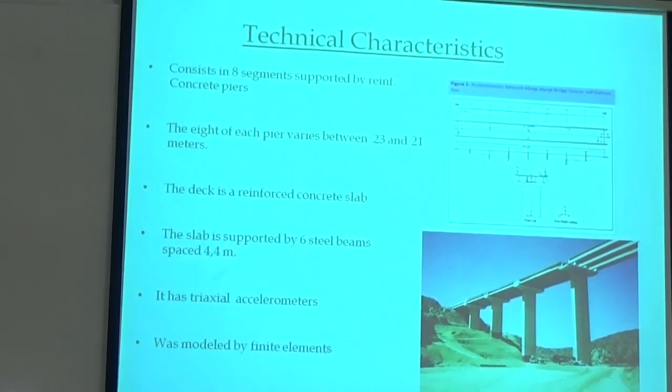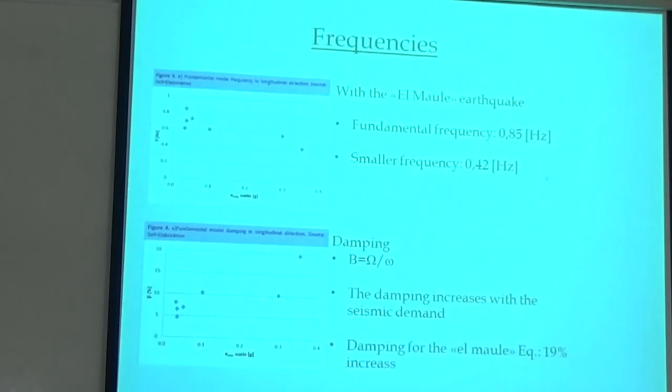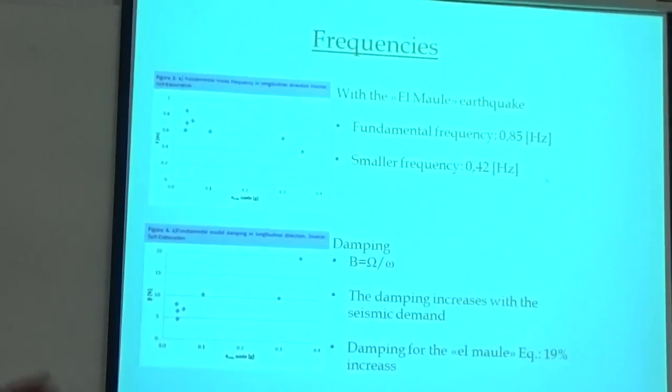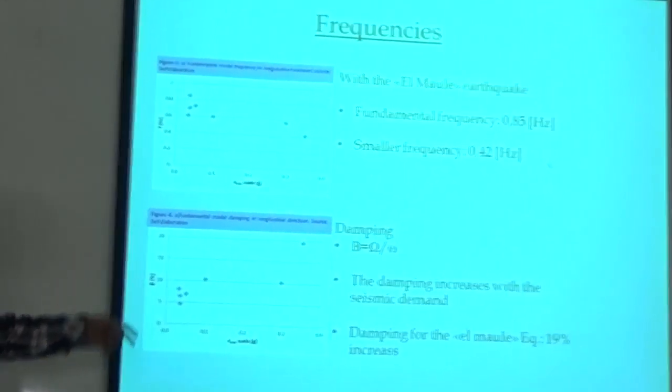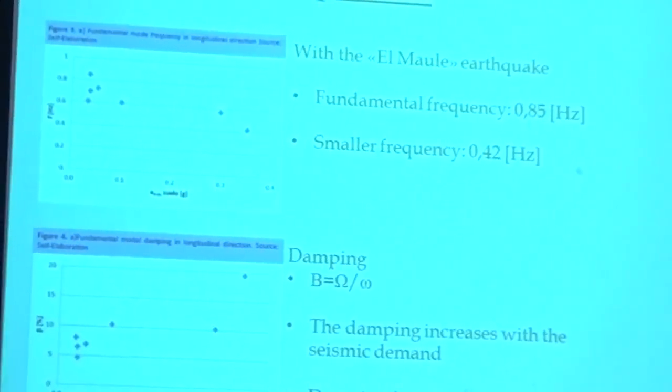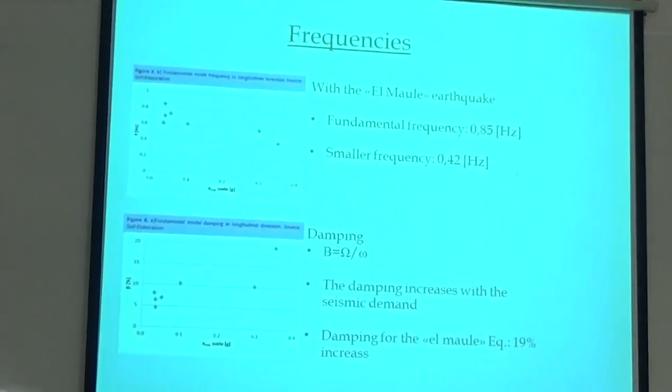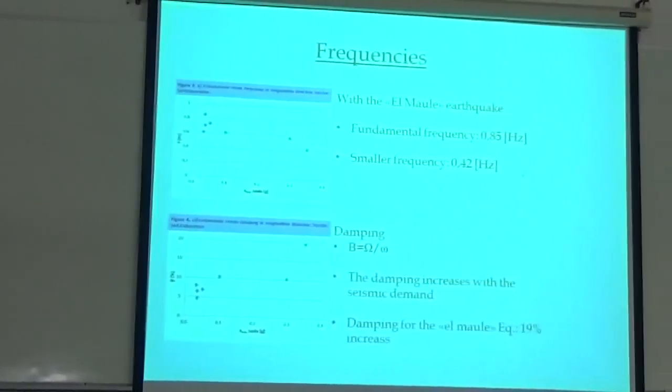And this is important. It was modeled by finite elements that we will see the results later. These were the frequencies of the earthquake of February 27th. And we can see the fundamental frequency was 0.85 hertz and the second mode frequency was 0.42 hertz.